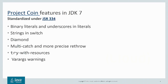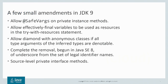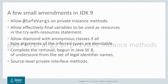Project COIN in JDK 7 was a collection of half a dozen small language changes, and we made further refinements to three of those in JDK 9: Diamond, try-with-resources, and VARARGS warnings. The small language changes included those updates to COIN as well as two updates related to Project Lambda from JDK 8, and we'll speak through these in turn.